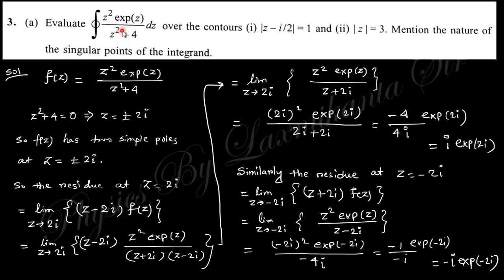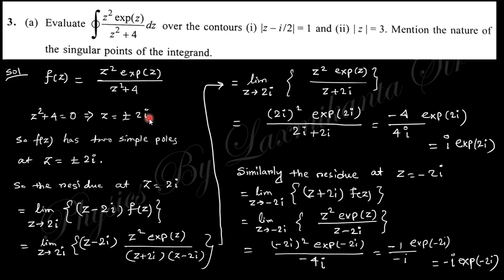Next question: evaluate the closed contour integration of z²·eᶻ / (z² + 4) dz and mention the nature of the singularities of the integrand. The function is z²·eᶻ / (z² + 4). Setting z² + 4 = 0 gives z = ±2i, so f(z) has two simple poles at z = ±2i.